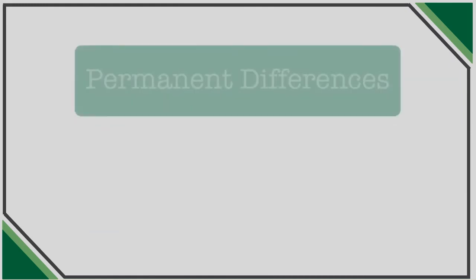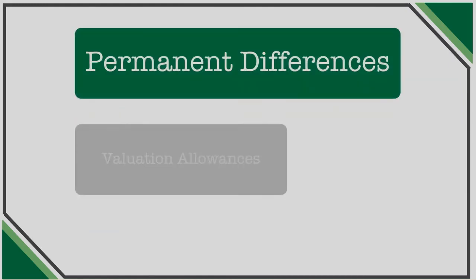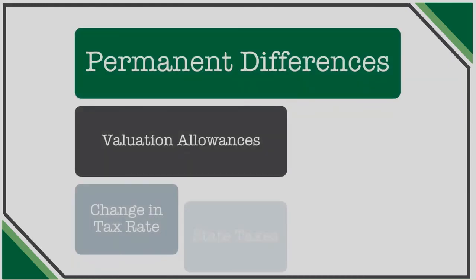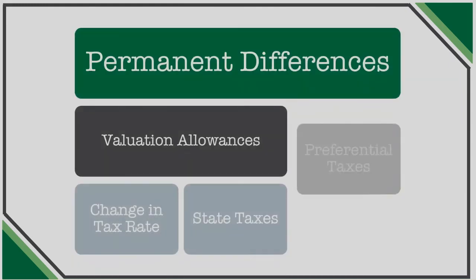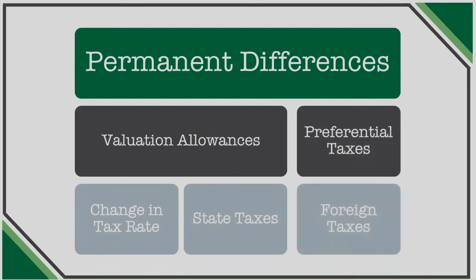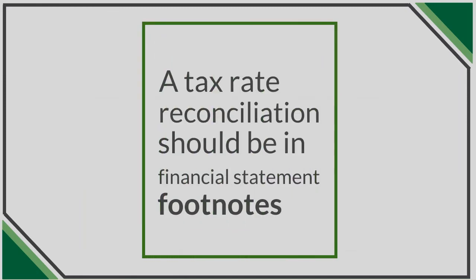Permanent differences, valuation allowances, changes in tax rates, items subject to a preferential tax, and state and foreign taxes on earnings are all examples of items that can impact the effective tax rate of a company. To the extent they are material, they should be considered in a company's rate reconciliation, similar to how we just itemized the permanent difference.